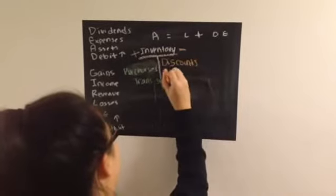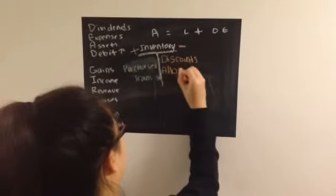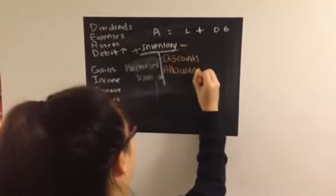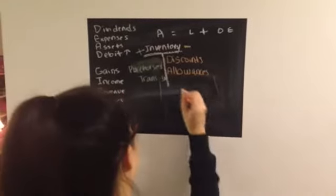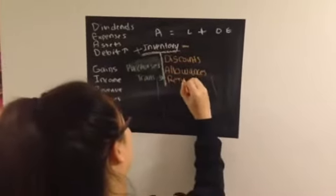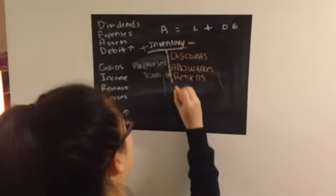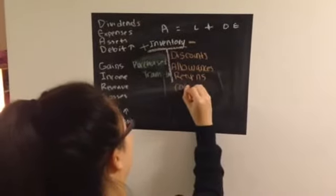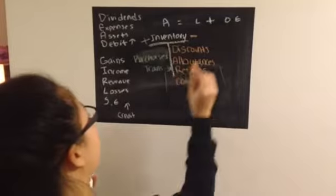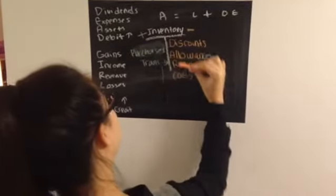We have discounts, allowances, returns, and cost of goods sold. Looking down here, it says DARC.